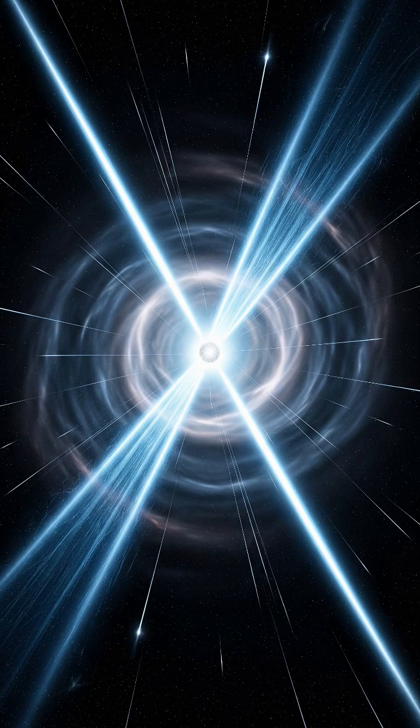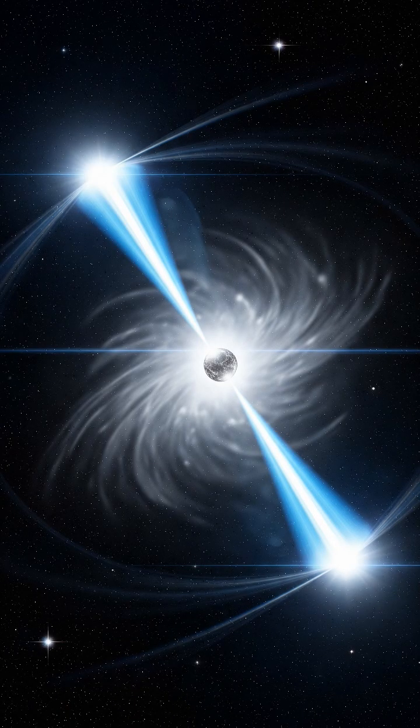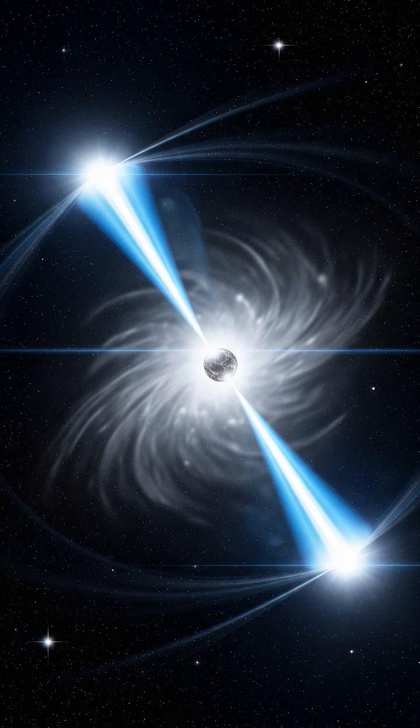Some neutron stars spin hundreds of times per second. These are called pulsars, and they shoot powerful beams of radiation across space, like cosmic lighthouses. The energy they release can outshine an entire galaxy.